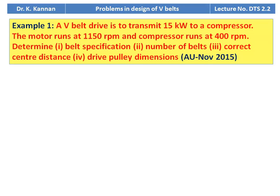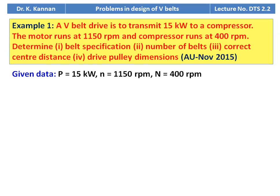Example number 1 from November 2015 question paper. A V-belt drive is to transmit 15 kilowatt to a compressor. The motor runs at 1150 RPM and the compressor runs at 400 RPM. Determine the belt specification, number of belts, correct center distance, and drive pulley dimensions. Given data: power = 15 kW, speed of motor = 1150 RPM, speed of compressor = 400 RPM.